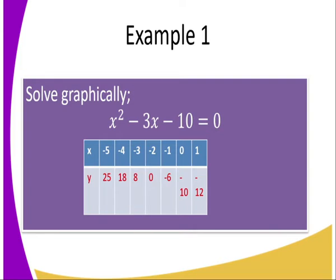We are given a quadratic equation: x squared minus 3x plus 10 equals zero. You are required to solve that equation graphically. The first step is to make a table where you have x and y. We can be given equations like those and told to solve them. You need to get the values of y using the calculator, replacing x with negative 5, negative 4, negative 3, negative 2, negative 1, 0, and 1.